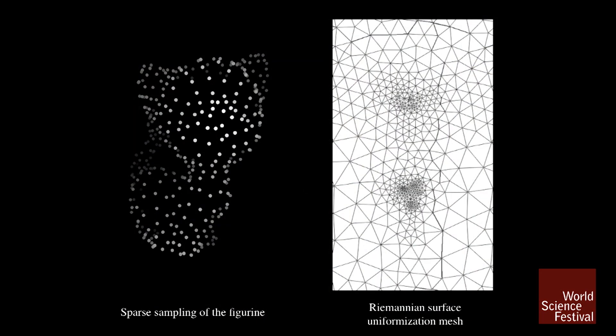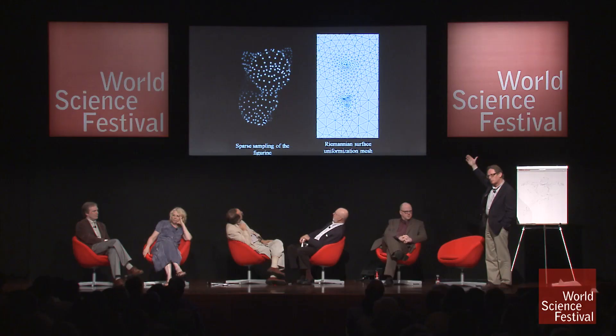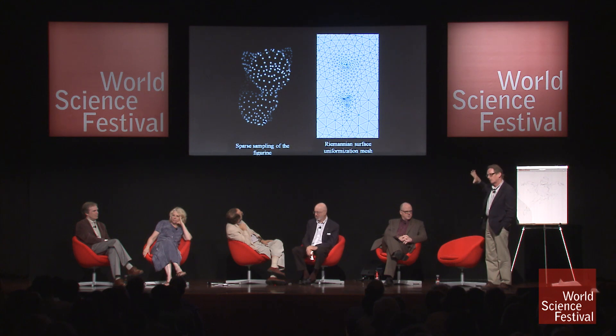But the Riemannian uniformization allows those dots to be projected to this 2D surface.